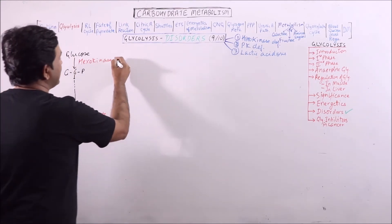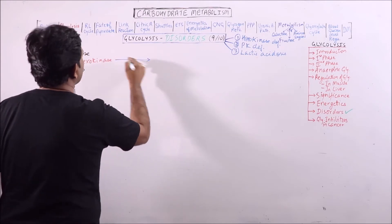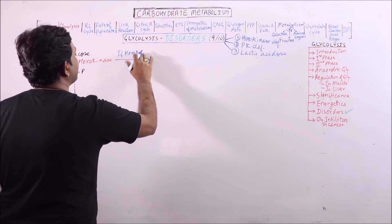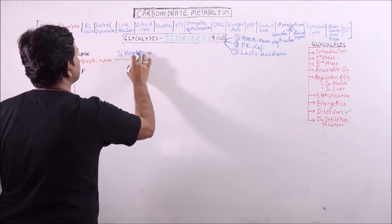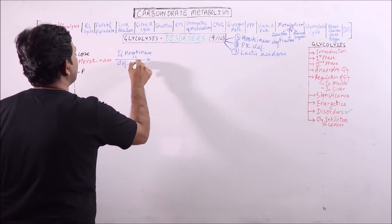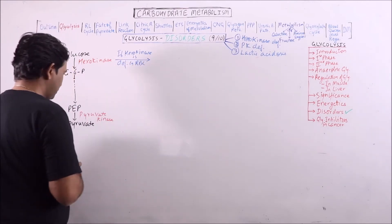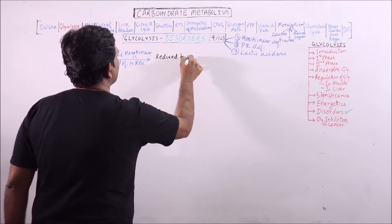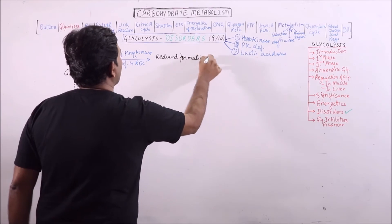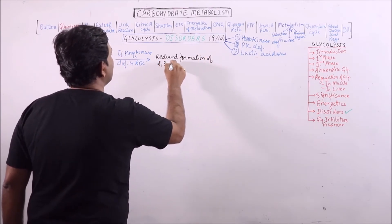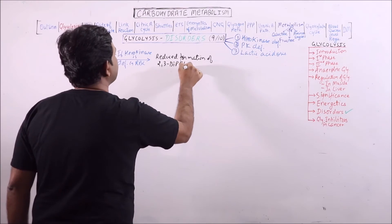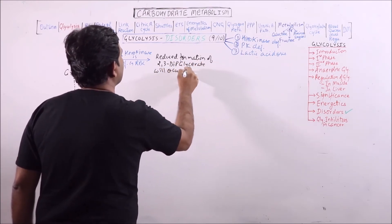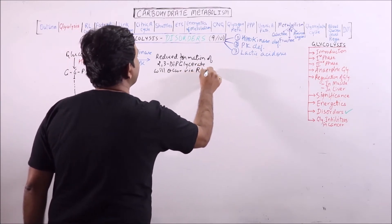The first one is: what will happen if hexokinase is deficient? If hexokinase is deficient in RBC, then reduced formation of 2,3-bisphosphoglycerate will occur via Rapaport-Luebering cycle.